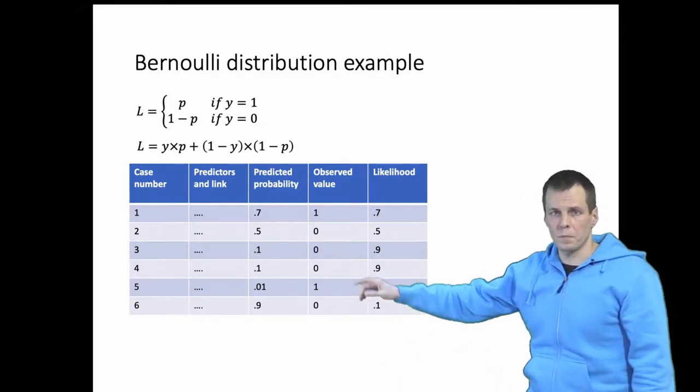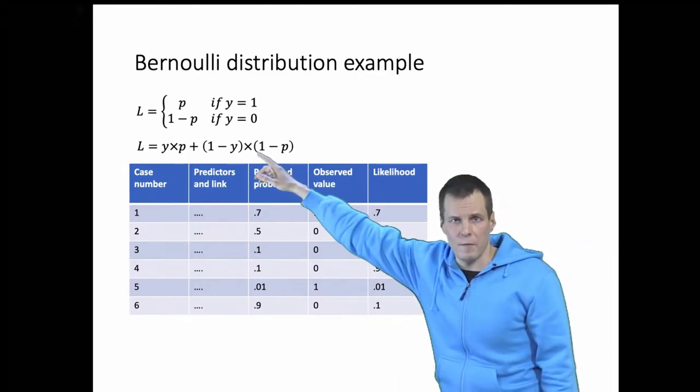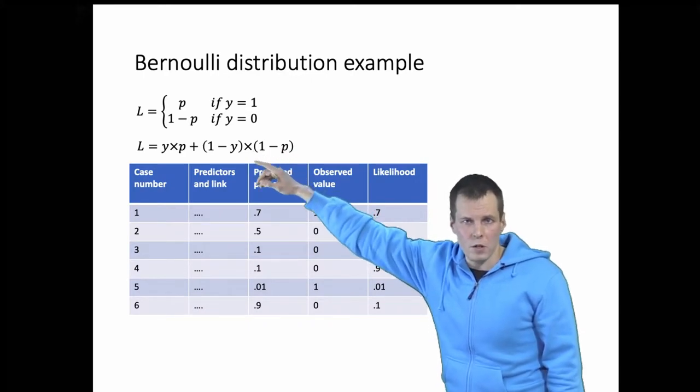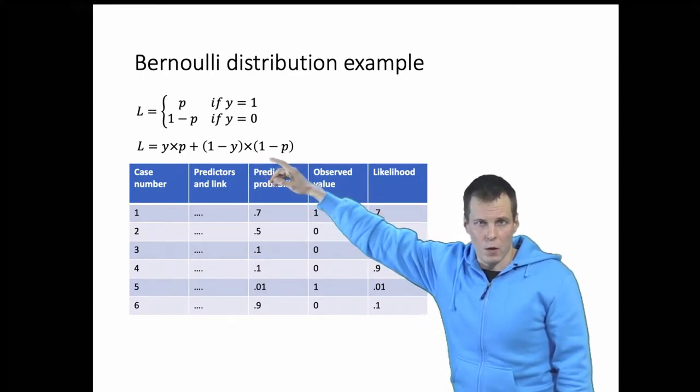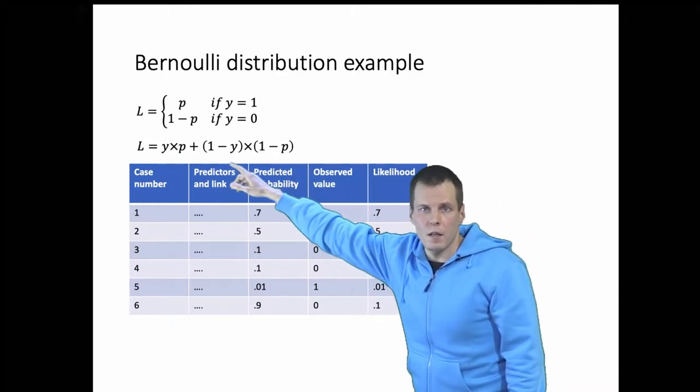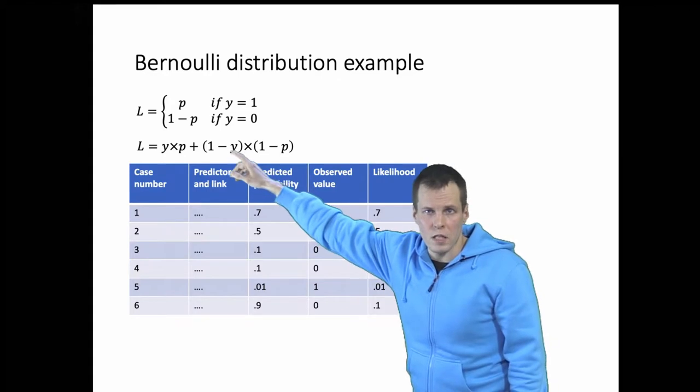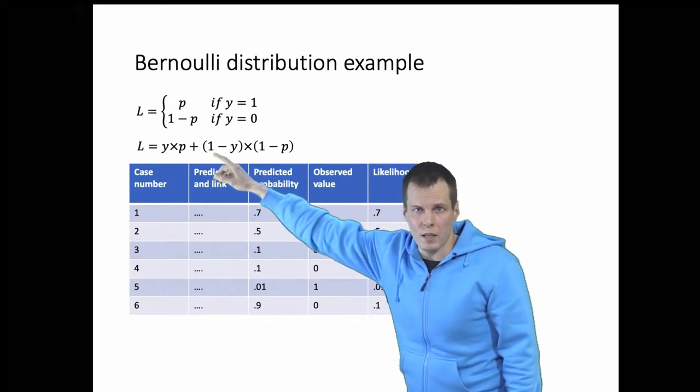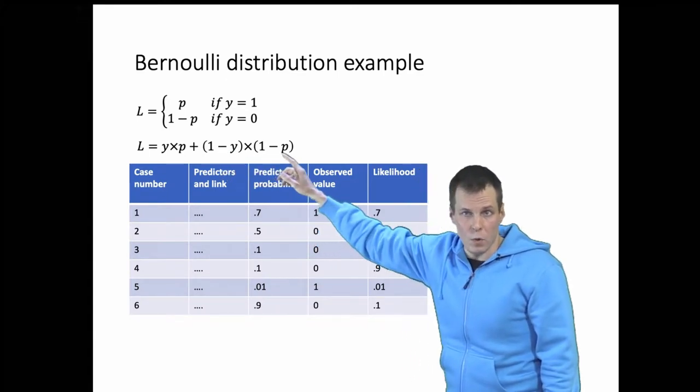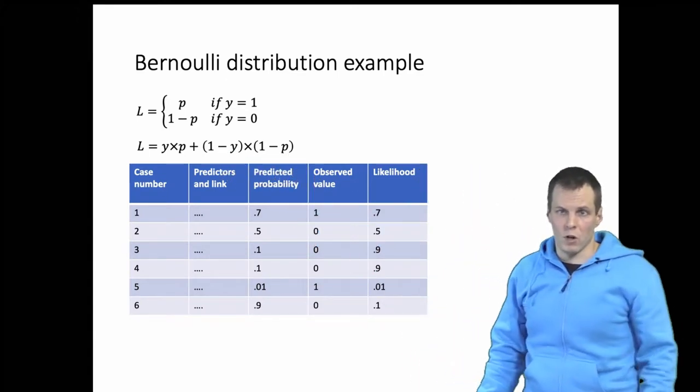So the idea is that we take the dependent variable, we multiply the predictive probability, and then we take one minus the dependent variable, we multiply one minus the predictive probability. The idea being that if the dependent variable is one this receives zero so we only take the probability. If the dependent variable is zero this receives one and we only take the one minus the probability into the likelihood.